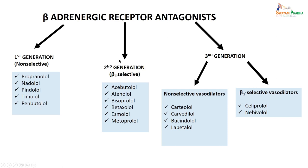Second generation drugs are beta-1 selective blockers — these include acebutolol, atenolol (most commonly prescribed), bisoprolol, betaxolol, esmolol (used in hypertensive crisis), and metoprolol (also commonly used).